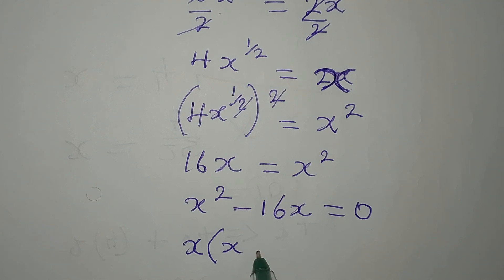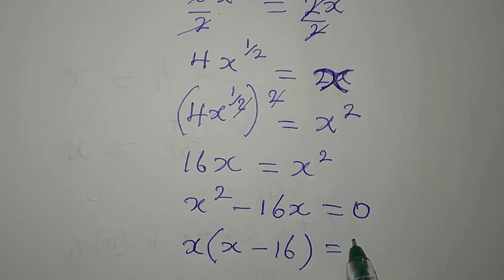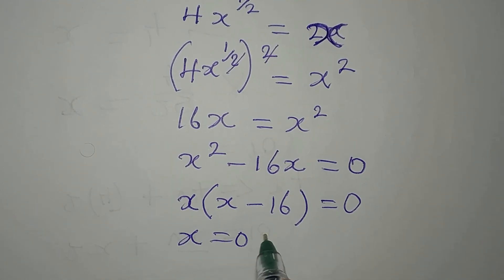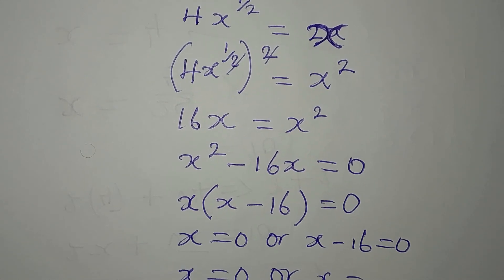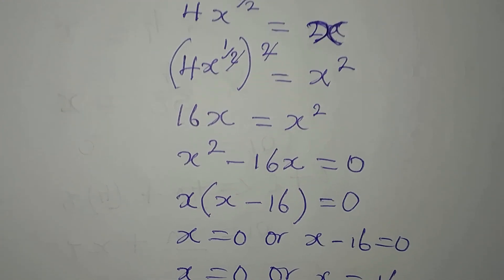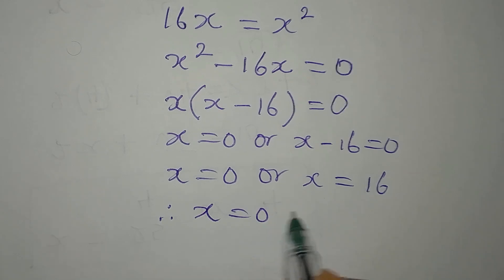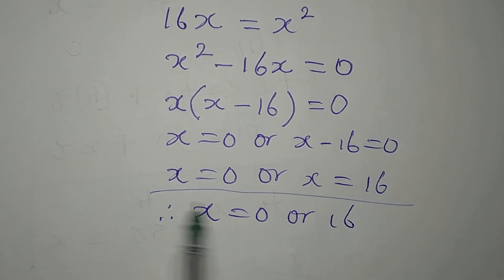This quadratic can be solved by factorization. We factor out x to get x times (x minus 16) equals zero. So either x equals zero, or x minus 16 equals zero, giving x equals 0 or x equals 16.